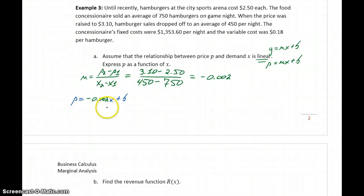So we know that P equals negative 0.002X plus some intercept B. Now what we can do is plug in any value that we're given for X and P. For instance, when X was 450, our price was 310. That would absolutely work, but I just noticed in my example here I used the other set of numbers, so just so I can stick with those numbers without having to recalculate, I used 750 and 2.5. It doesn't matter which coordinate pair we use, but this gives us 2.5 equals negative 0.002 times 750 plus B. So solving for that, we should get B equals 4.